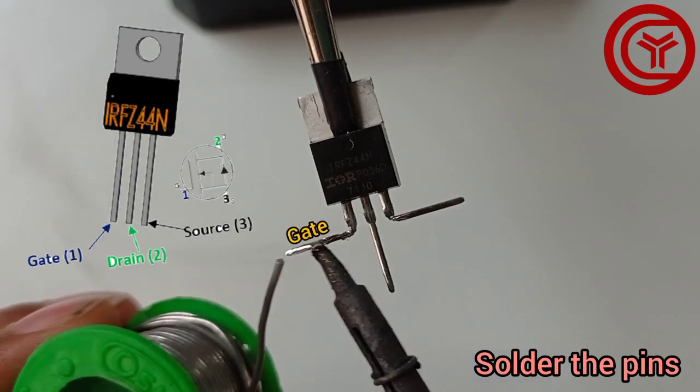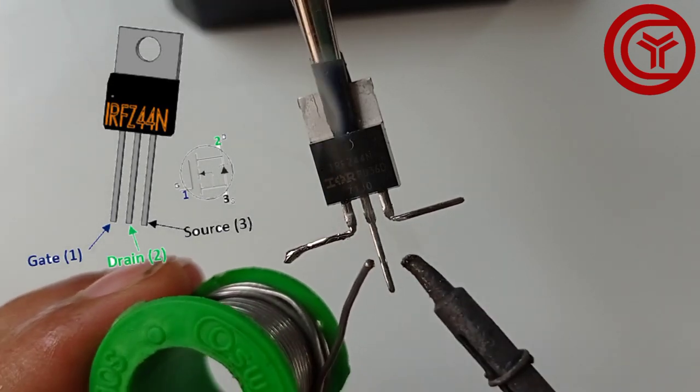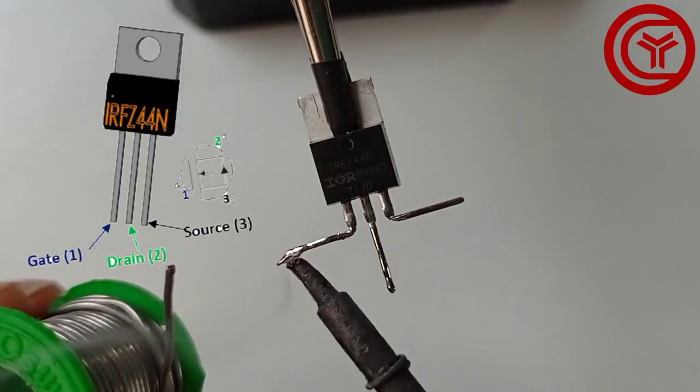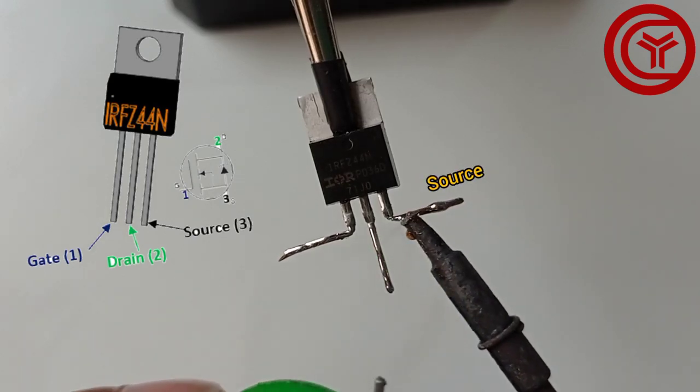Pin 1 is gate. Pin 2 is drain. And pin 3 is source.